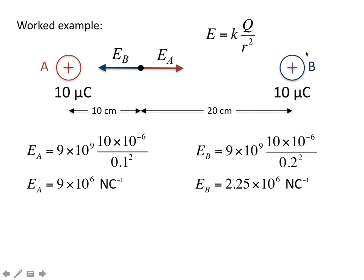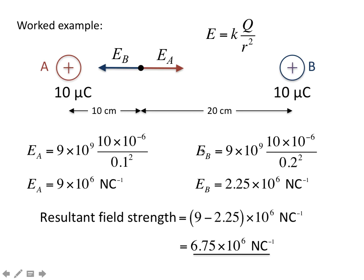Plug in the numbers. K, Q's. This is the charge due to A. This is the field strength due to B. So the resultant one is one minus the other. And there is your answer. Follow it through again if you need another go.